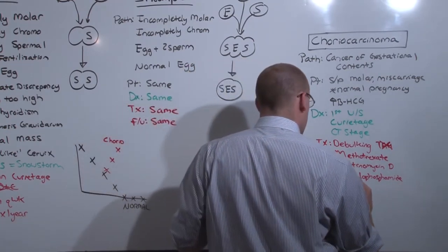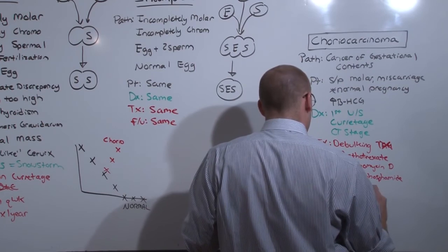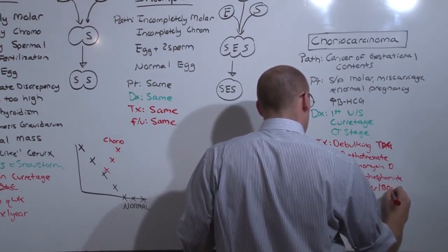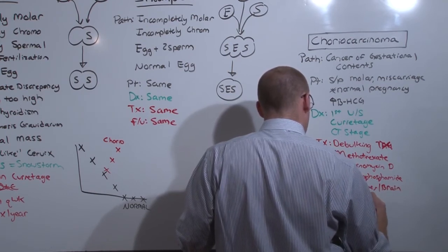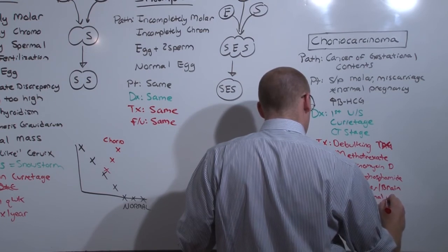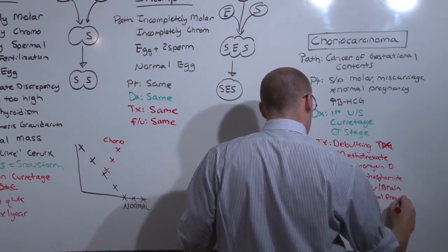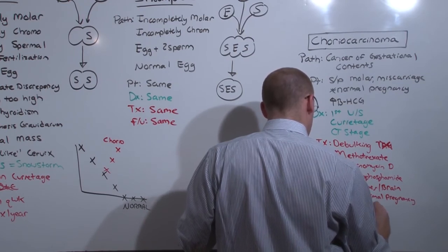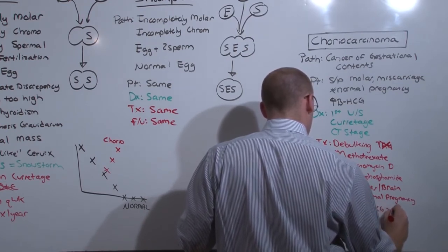That is, in the case of an OR statement, someone who has liver or brain mets, someone who has a choriocarcinoma after a normal pregnancy, or in someone who the beta-HCG was greater than 40,000.